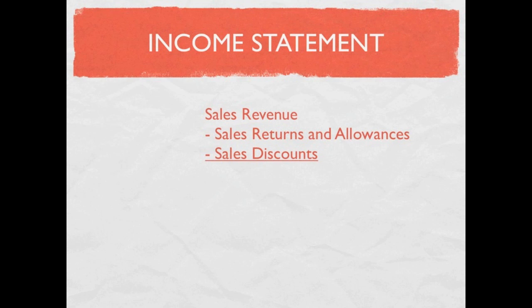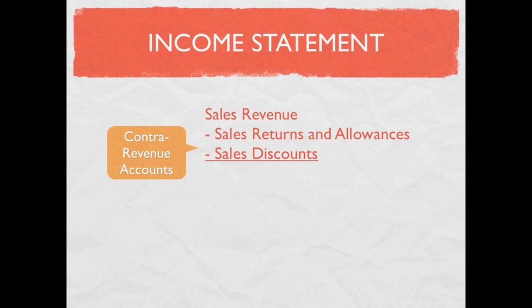Both of these accounts are called contra revenue accounts. Think about revenues — they carry a credit balance. Contra revenues are the opposite: they carry debit balances and they effectively reduce net revenues. So from sales we're going to subtract those contra revenue accounts to get our net sales revenue.